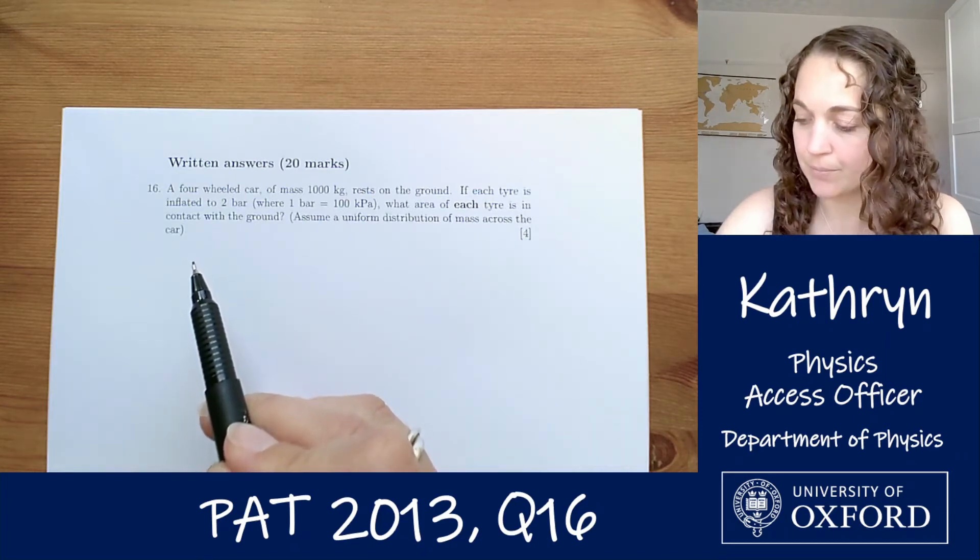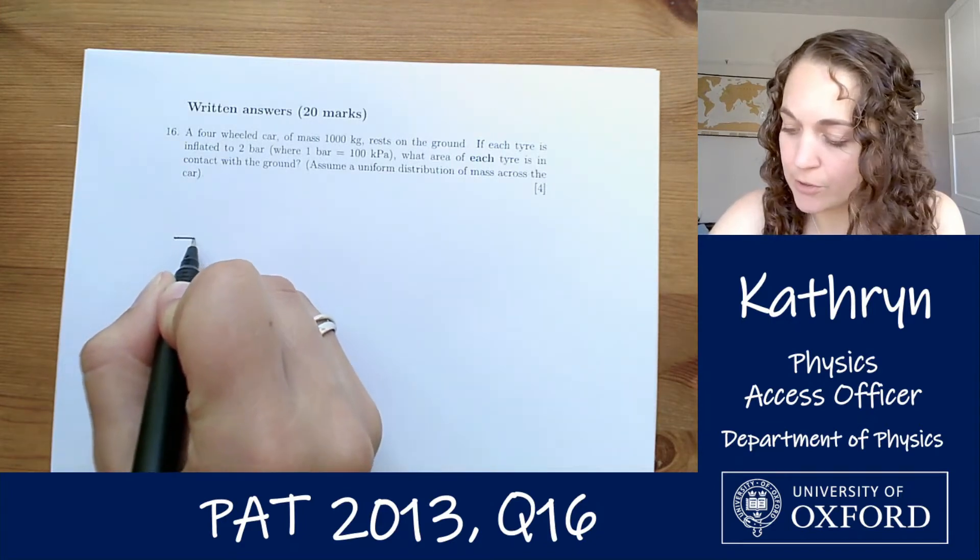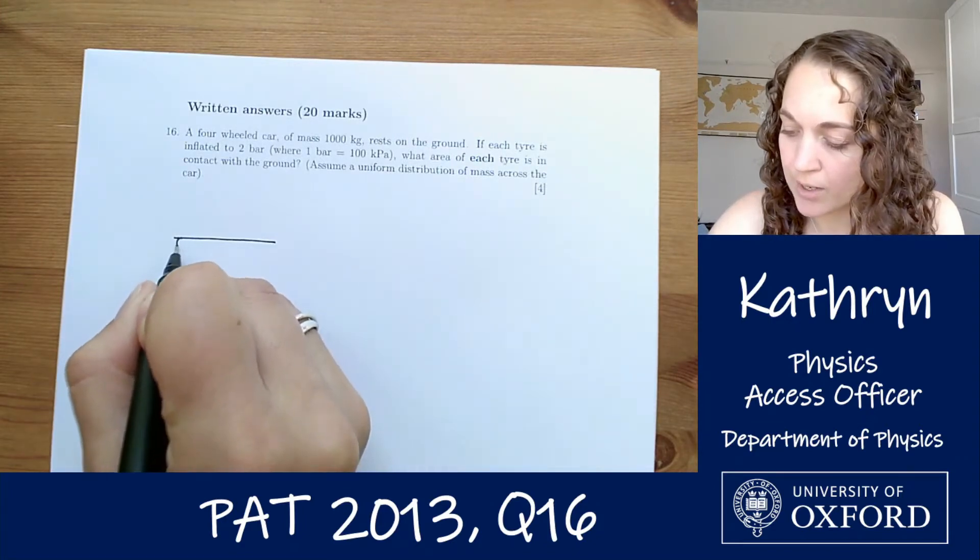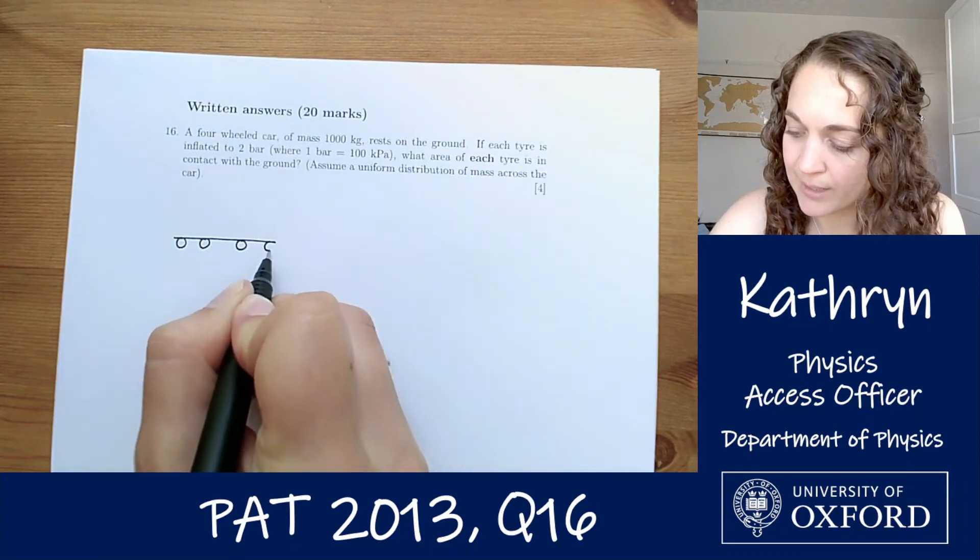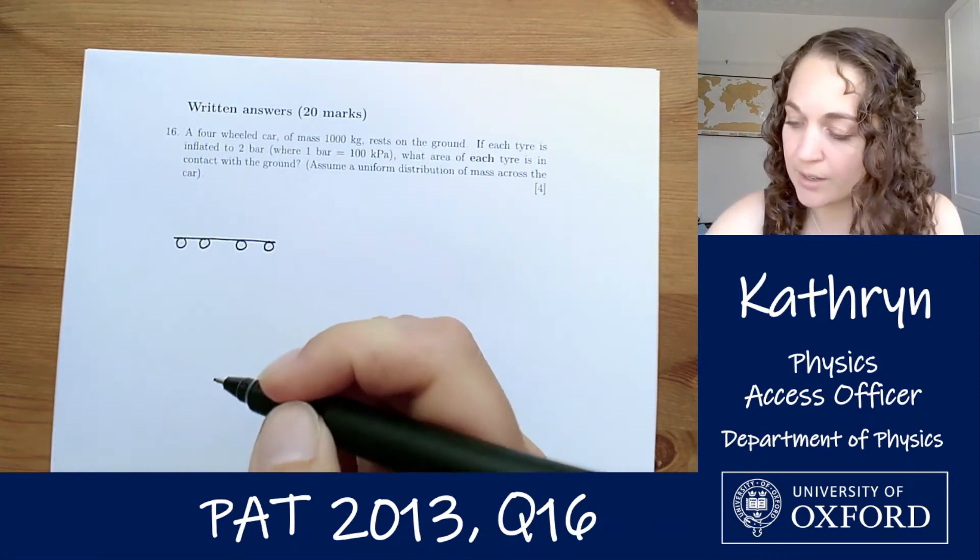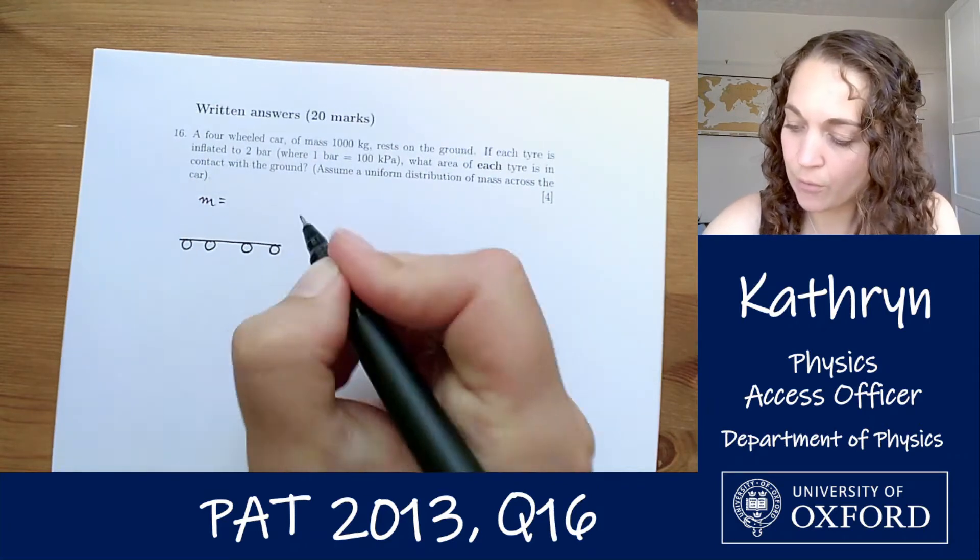Okay, so what we've got is a four-wheeled car. I'm going to draw a somewhat untypical diagram of a car with the four wheels like this. We've got our four-wheeled car. It has a mass of 1000 kilograms.